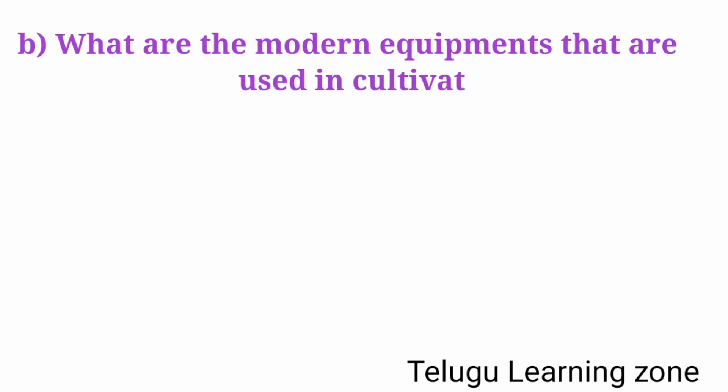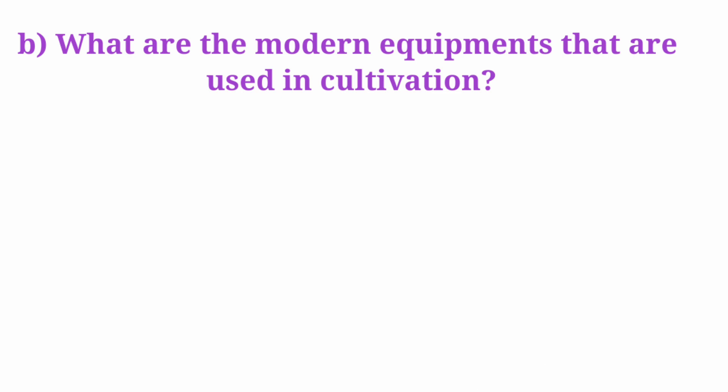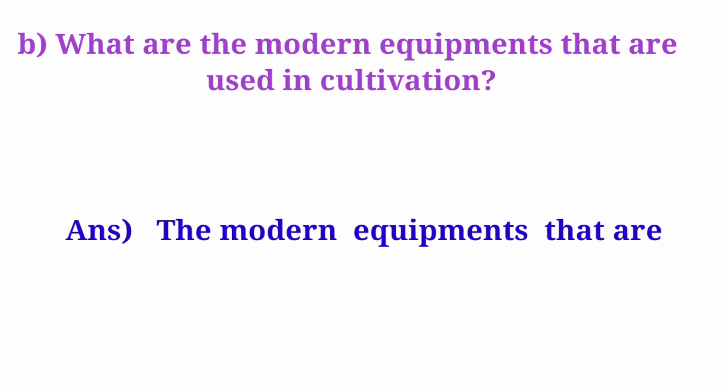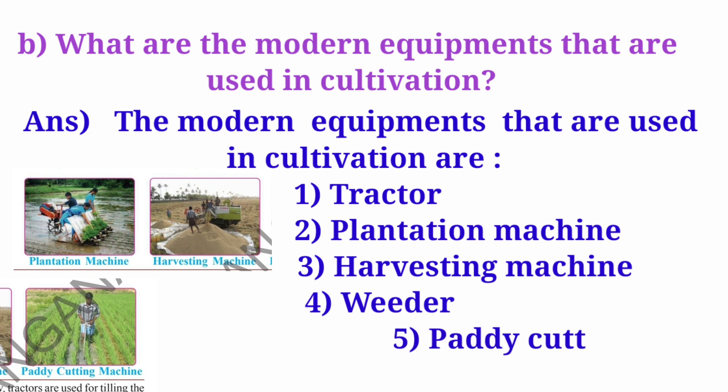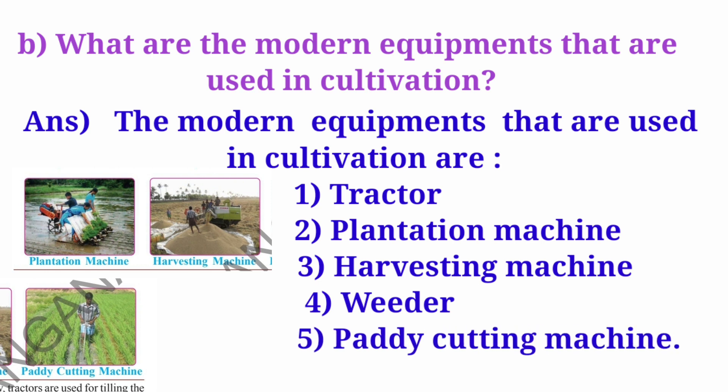Question B: What are the modern equipments that are used in cultivation? Answer: The modern equipments that are used in cultivation are tractor, plantation machine, harvesting machine, weeder, and paddy cutting machine.